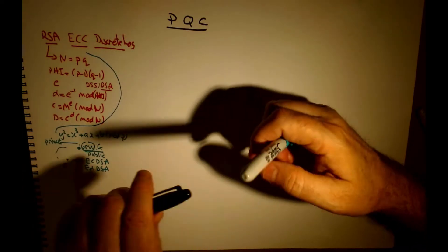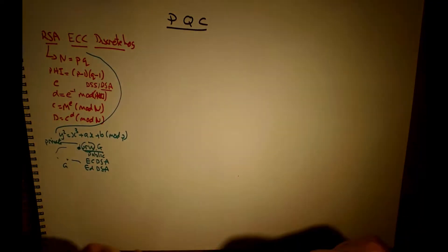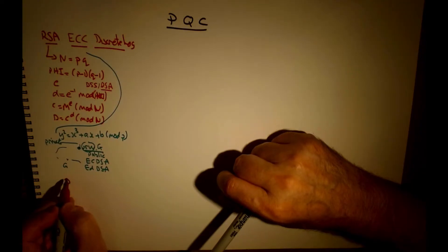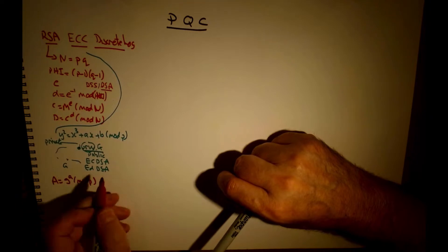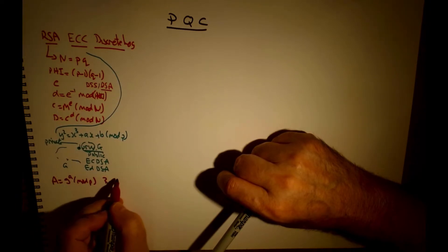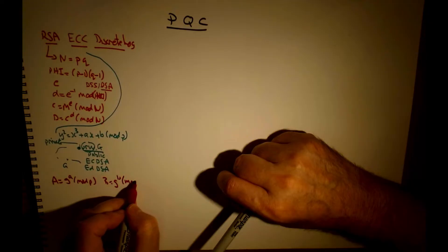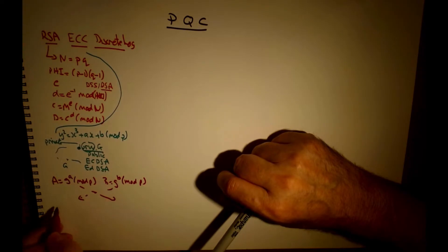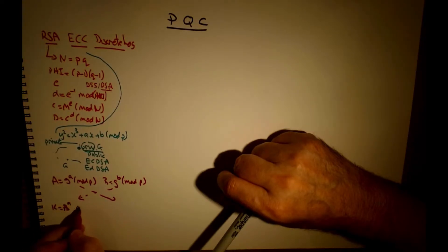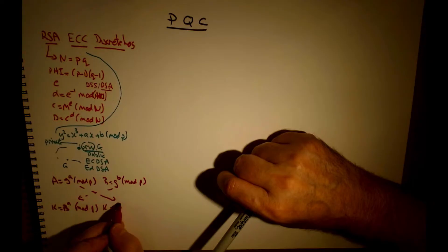When it comes to discrete logs, we can have an exponent value mod P — this might be Alice's value — and Bob creates G to the power of B mod P. We can exchange these values and then work out a key, which is Bob's value to the power of A mod P, and Bob can work out the same key, which is A to the power of B mod P.